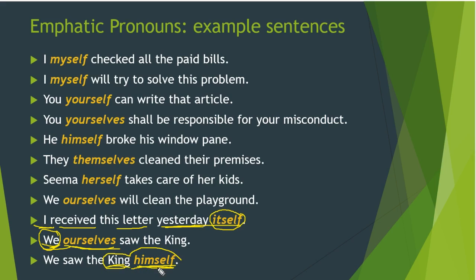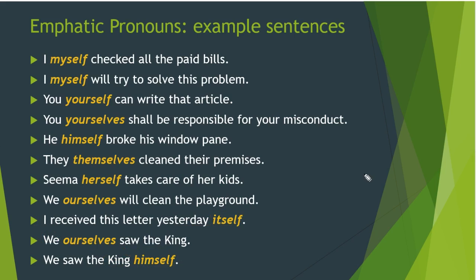'We saw the king himself' — 'king' is third person singular, so 'himself' is used as the compound personal pronoun. Because its purpose here is to emphasize 'king', it is an emphatic pronoun. In 'We ourselves saw the king', the stress was on 'we' (the subject). In 'We saw the king himself', the stress is on 'king' (the object). Just by changing the position of the emphatic pronoun, the meaning and tone change.